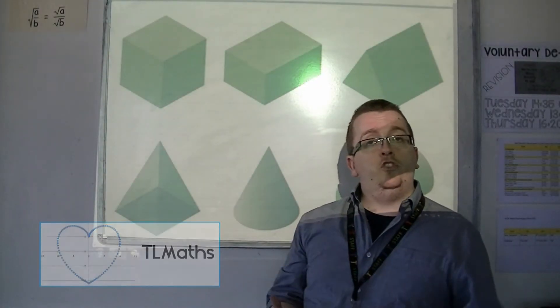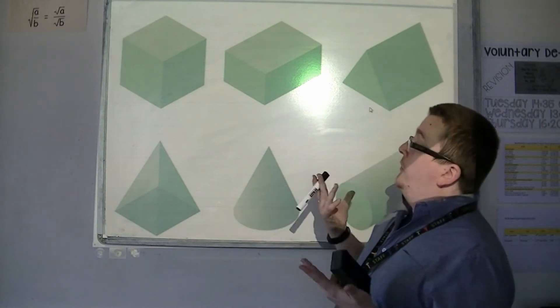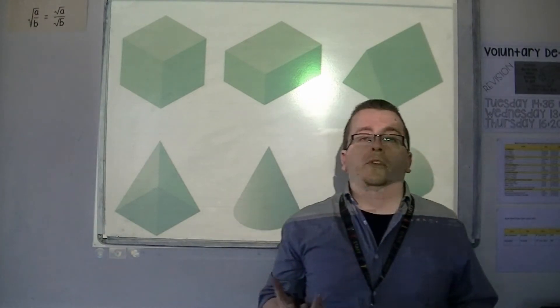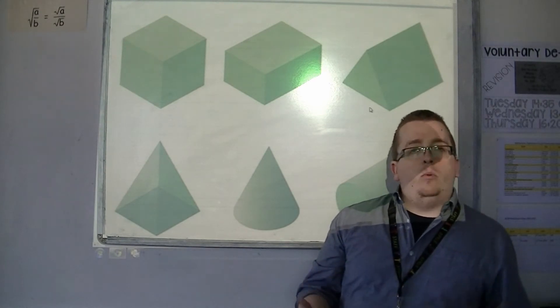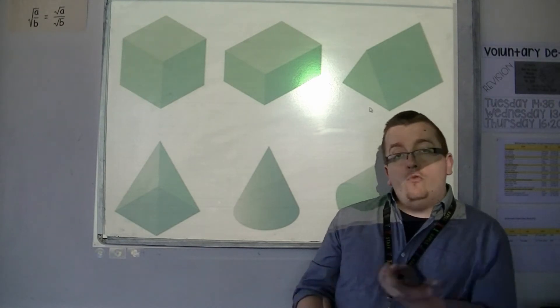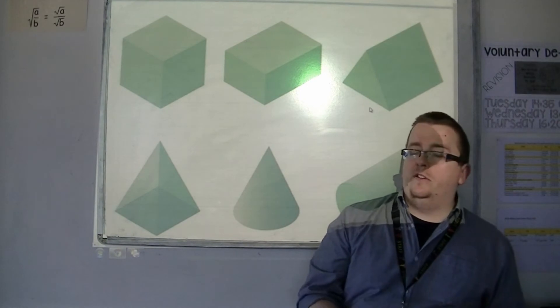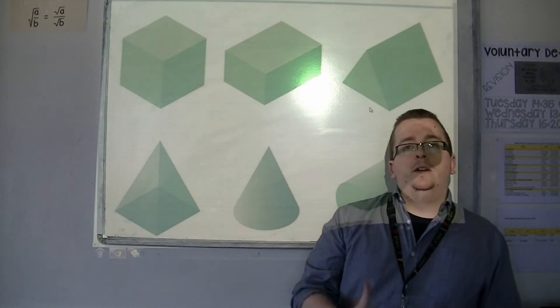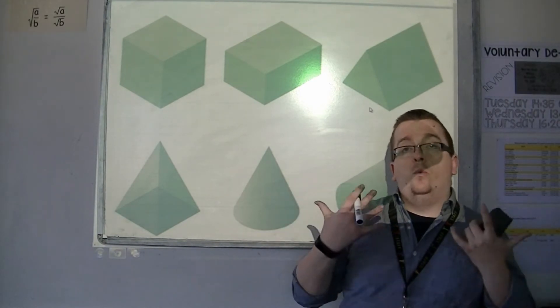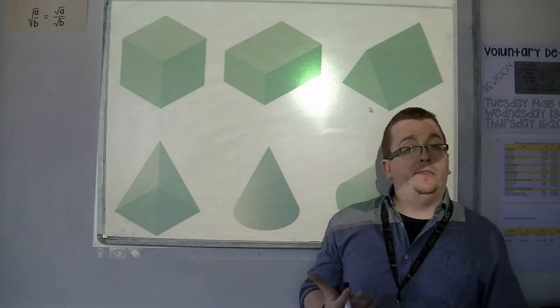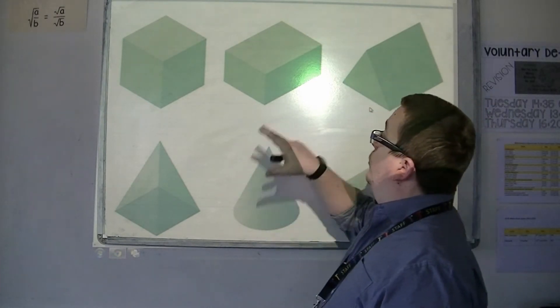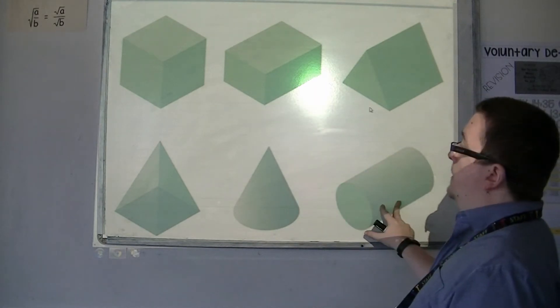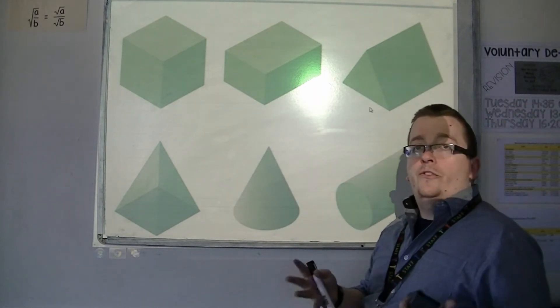In this video I'm going to be introducing you to the names of some three-dimensional shapes that you need to know the names of and be able to identify. There's not much that we can do with a lot of them mathematically at this stage, but we want to know what they're called and what their properties are. We're going to start off with these six that I have here and there's two more to do.